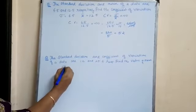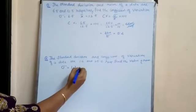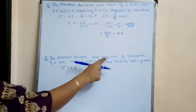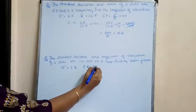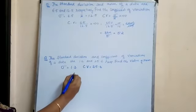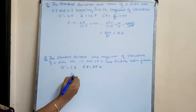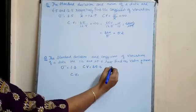So here standard deviation sigma is equal to 1.2 and coefficient of variation CV is equal to 25.6. X bar is to be found.